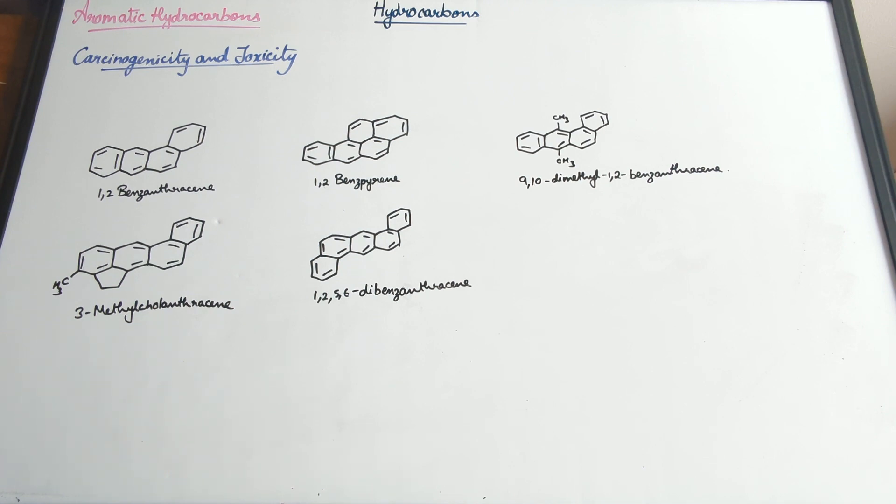With that, we're done with the chapter on hydrocarbons. We started with the classification of hydrocarbons—saturated and unsaturated and aromatic—and then we moved on to talking about alkanes. Alkanes have the general formula CnH2n+2, and we talked about the various methods of preparation, the structure, the physical properties, the chemical properties.